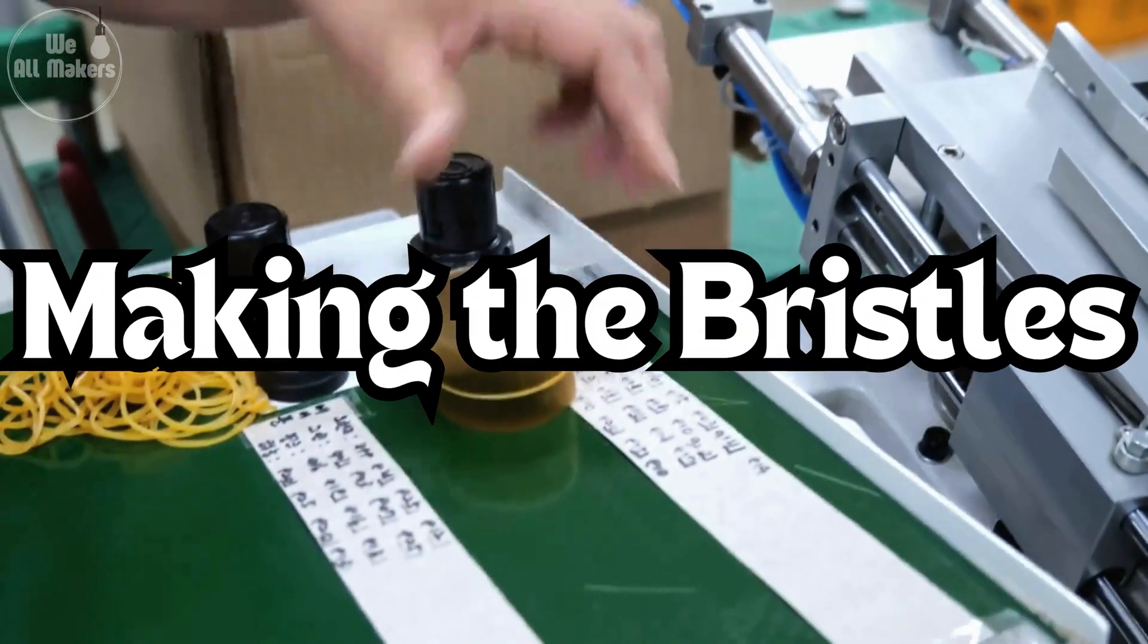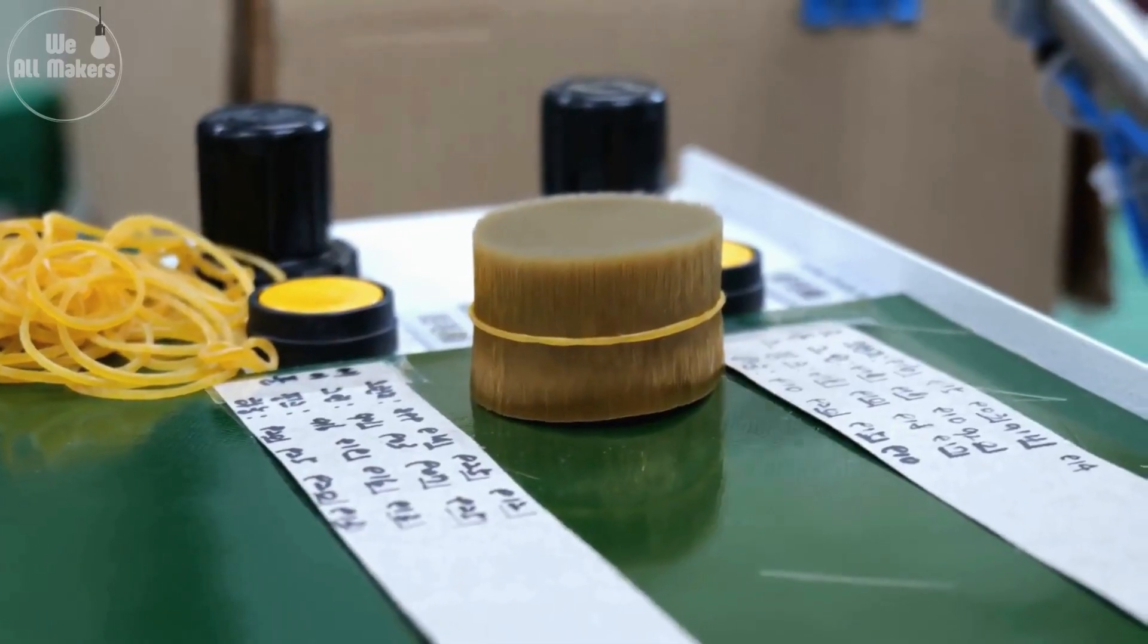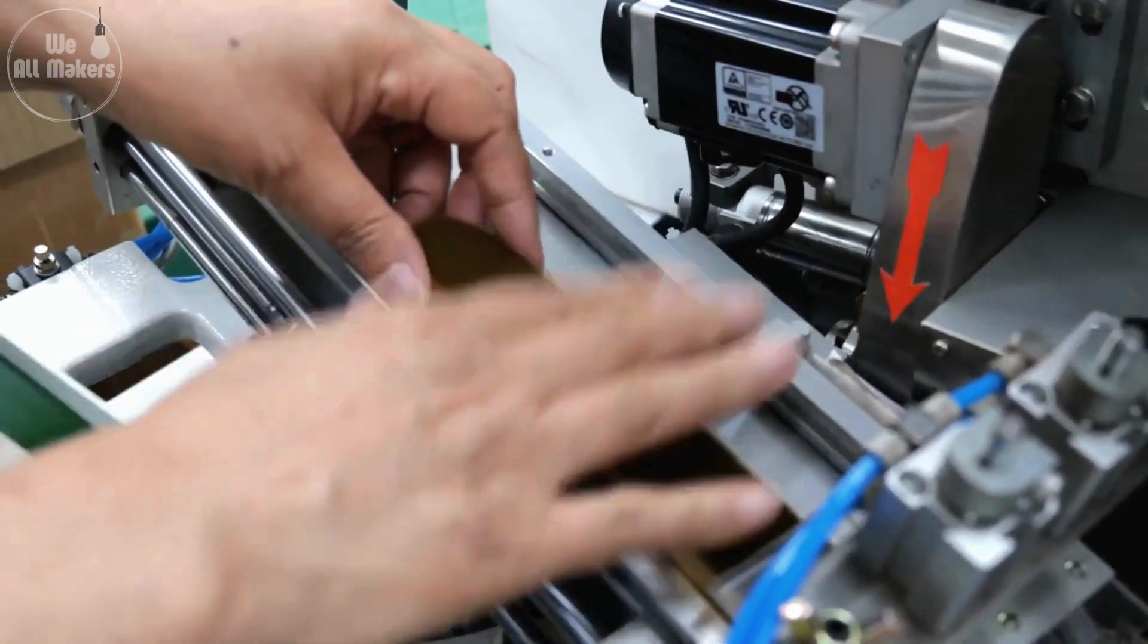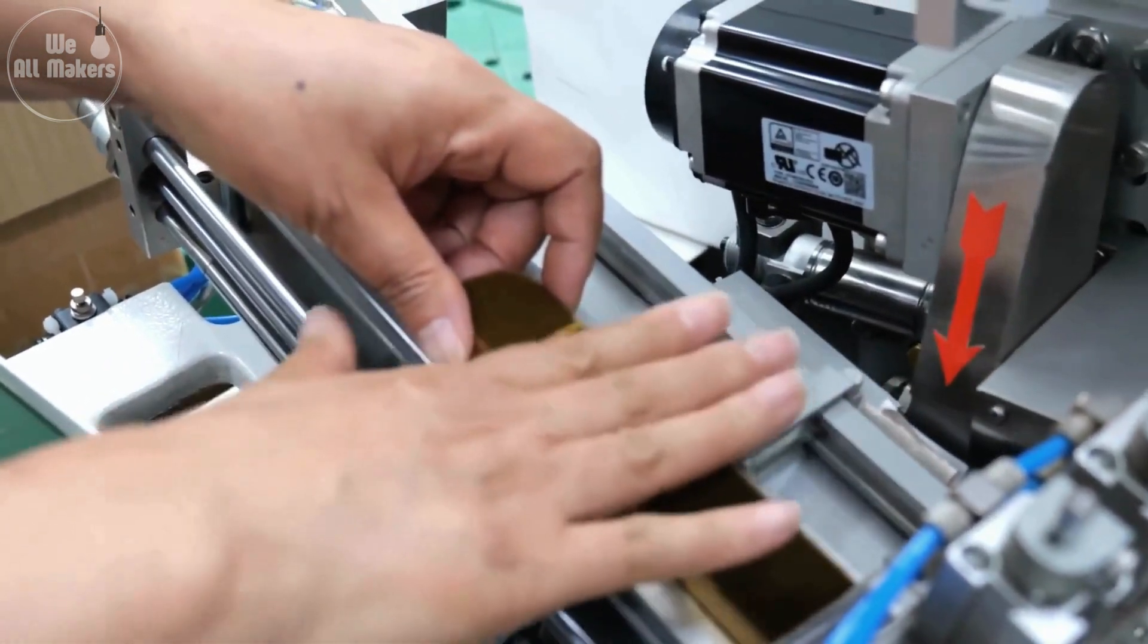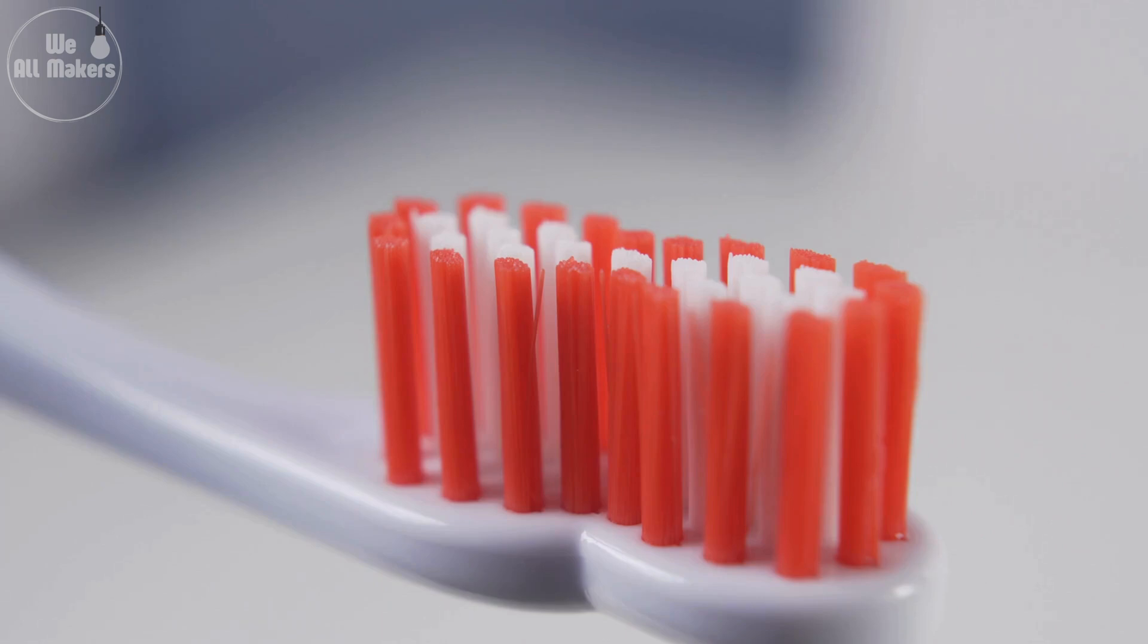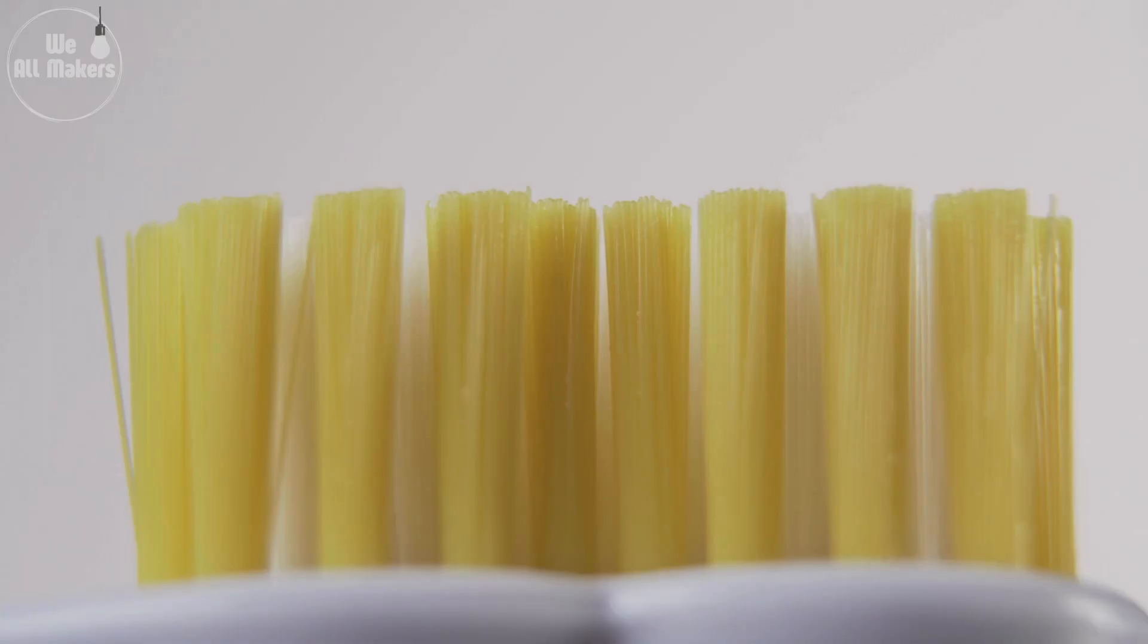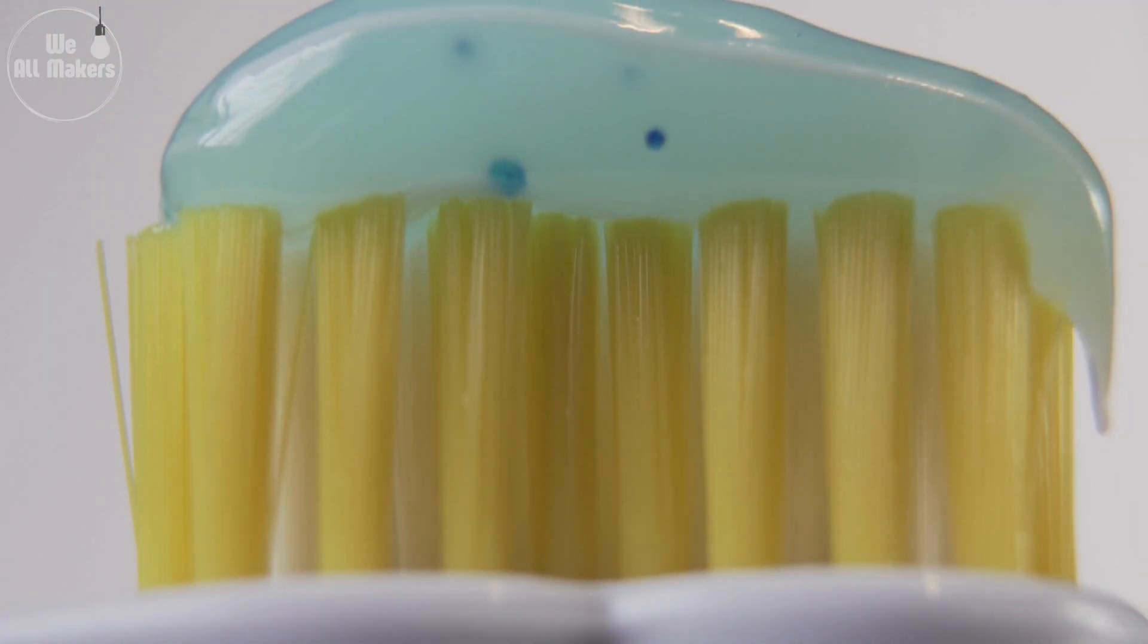Step 3: Making the bristles. The bristles, usually made from nylon, are next. The nylon is heated and stretched into long, thin strands. These strands are then cut into tiny pieces that will become the bristles of your toothbrush. Think of it like making spaghetti, but much thinner. The bristles need to be soft enough to clean your teeth without hurting your gums, which makes this step super important.